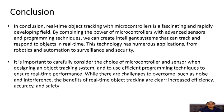Conclusion. In conclusion, real-time object tracking with microcontrollers is a fascinating and rapidly developing field. By combining the power of microcontrollers with advanced sensors and programming techniques, we can create intelligent systems that can track and respond to objects in real-time. This technology has numerous applications, from robotics and automation to surveillance and security. It is important to carefully consider the choice of microcontroller and sensor, and to use efficient programming techniques to ensure real-time performance. While there are challenges to overcome such as noise and interference, the benefits of real-time object tracking are clear: increased efficiency, accuracy, and safety.